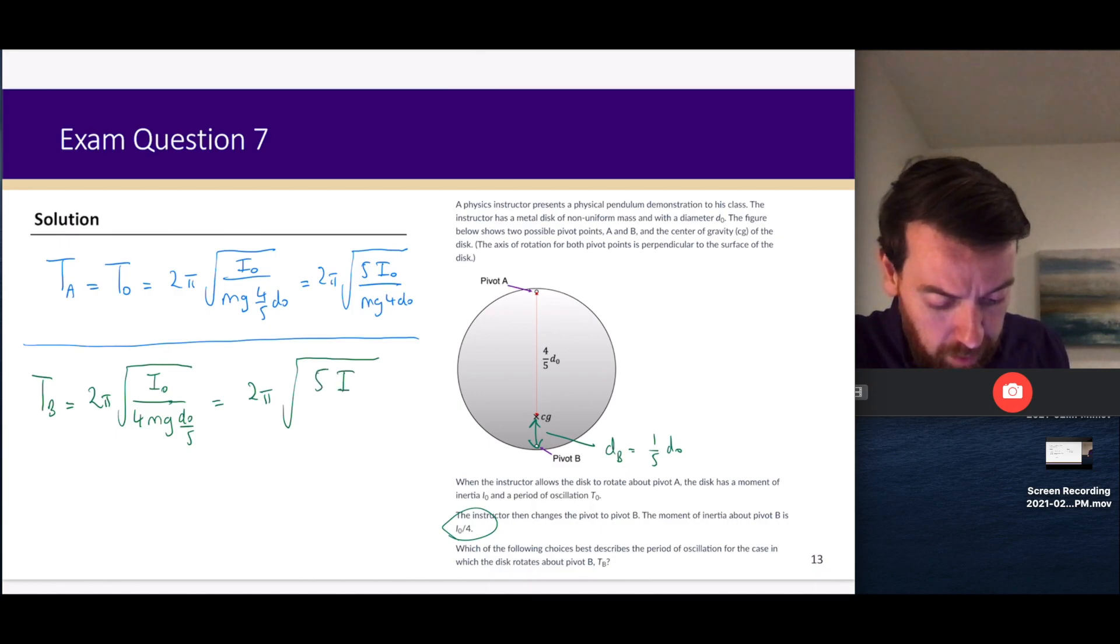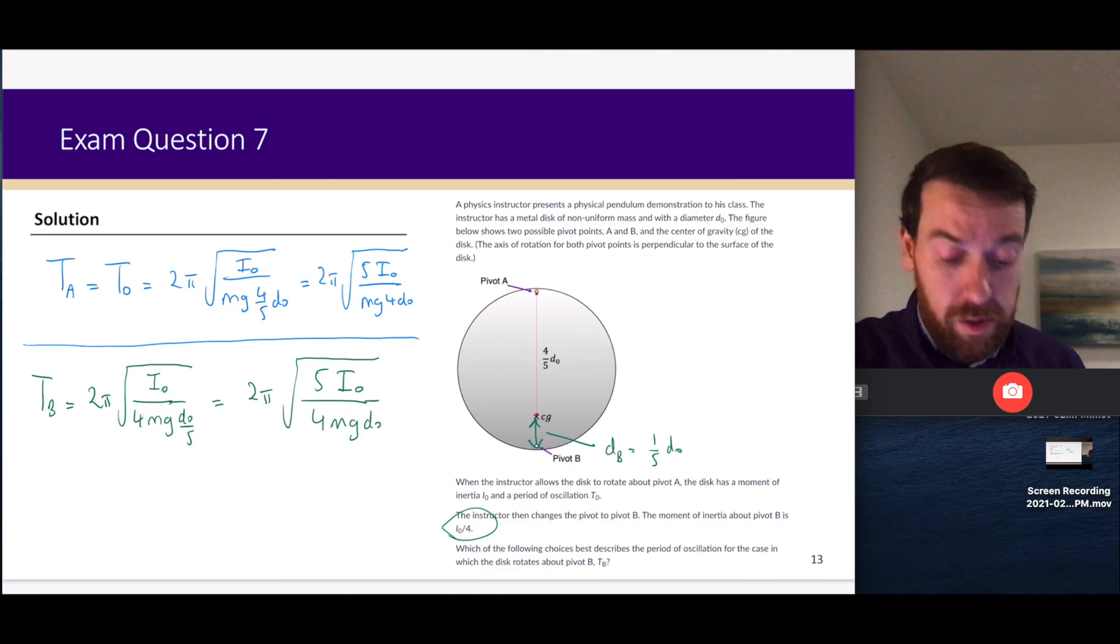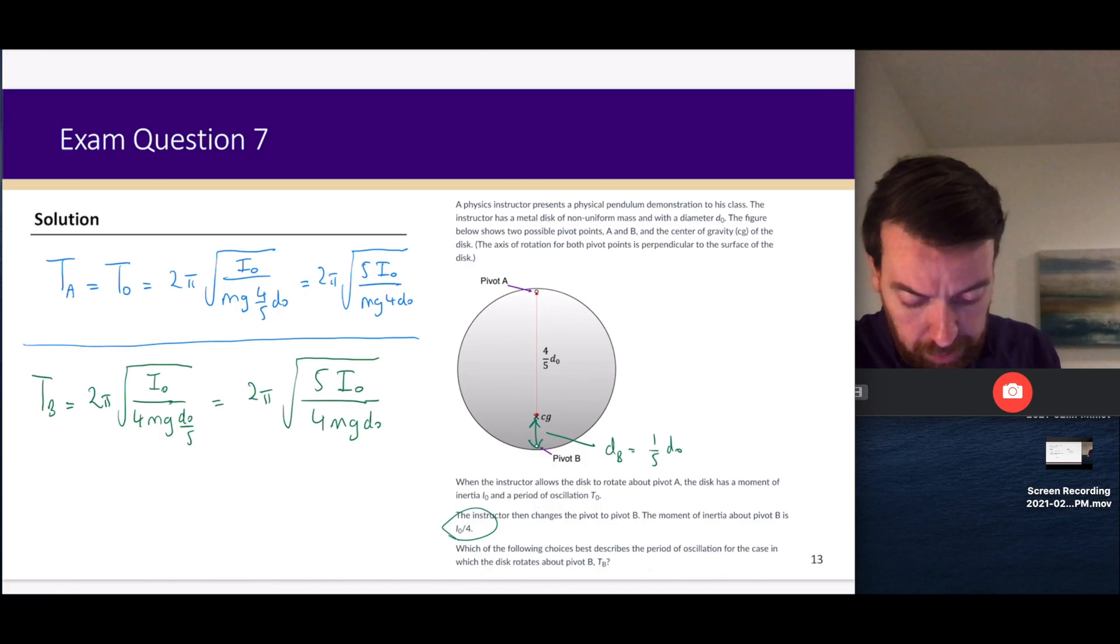I have 2π√(5I₀/(4mgd₀)). If we take a look at the two expressions, they're identical. So the correct answer here is that T_A equals T_B, or T_B equals T₀.